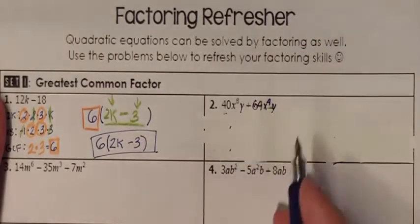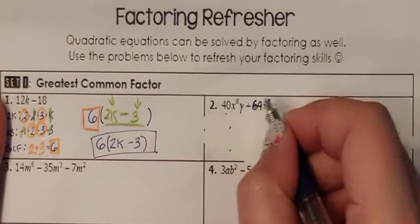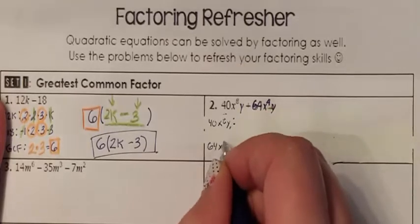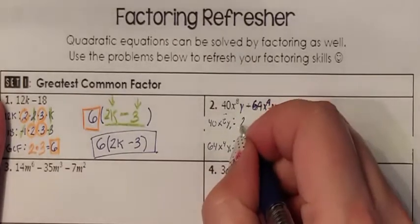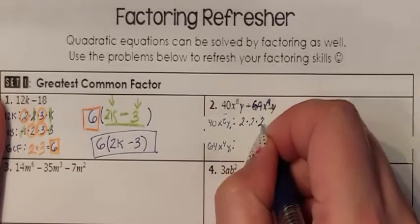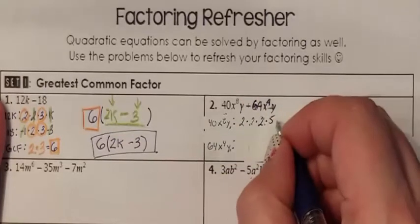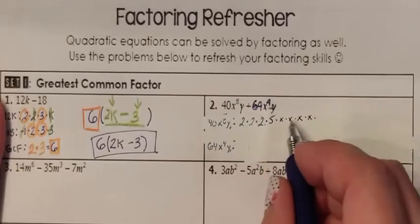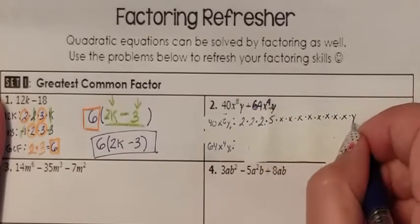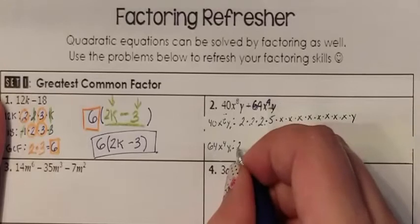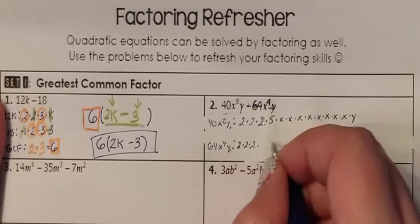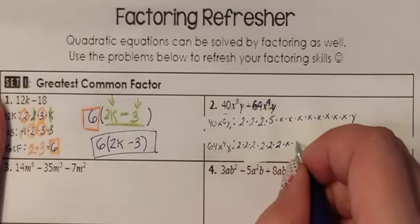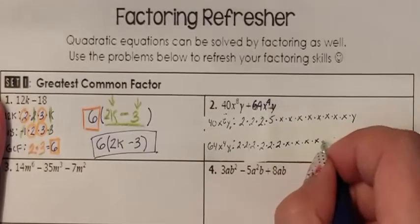I have 2 terms, so I need 2 prime factorization lists. 40 is 2 times 2 times 2 times 5. X to the 8th means there were 8 X's, and then you have your Y. The prime factorization of 64 is 2 times 2 times 2 times 2 times 2 times 2 times 2. X to the 4th means there were 4 X's, and then you have your Y.